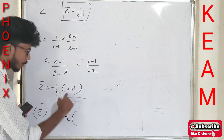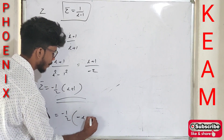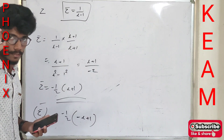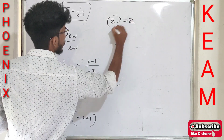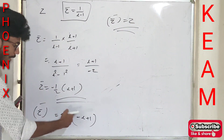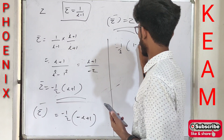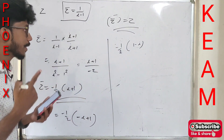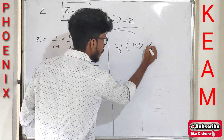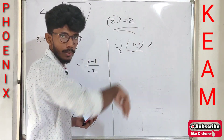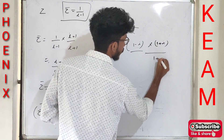That means z-bar = 1/(i − 1), which gives us i + 1. That means 1 − i. So using z-bar as the conjugate of z, that means i + 1 − i. We want to use z-bar to find z.